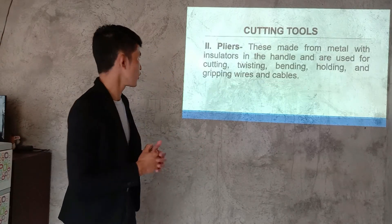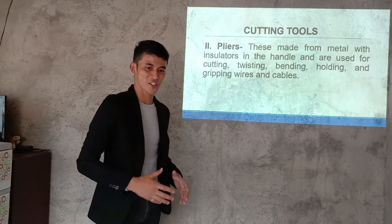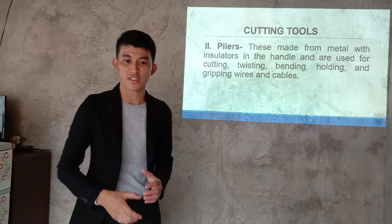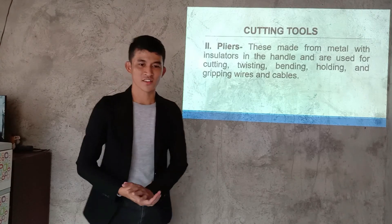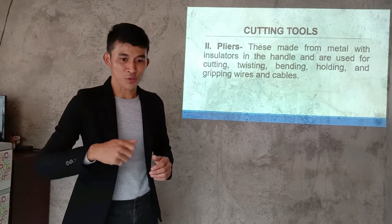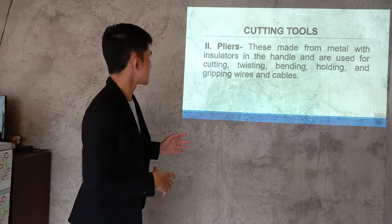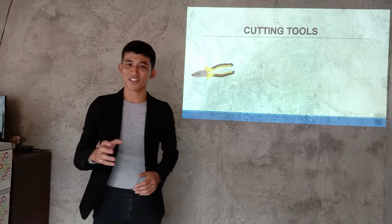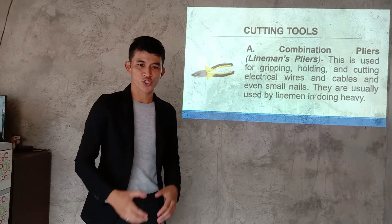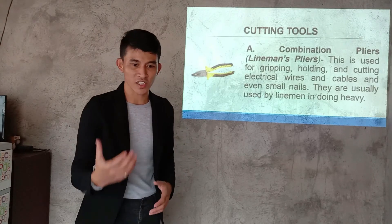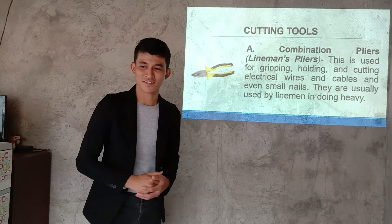Next we have cutting tools. Under cutting tools — pliers. You're familiar with pliers, I know that, because you are electrical students. Pliers are made from metal with insulators on the handle. They are used for cutting, twisting, bending, holding, and gripping wires and cables. What do you call that one? Correct — that is combination pliers or lineman pliers. This is used for gripping, holding, and cutting electrical wires and cables, but it is more often used for gripping.